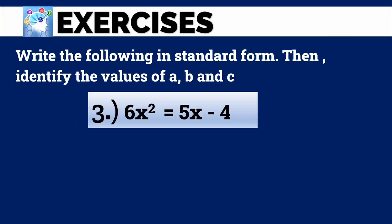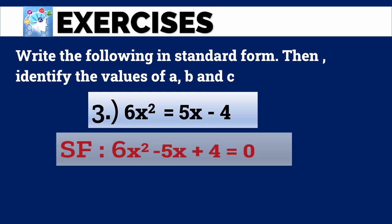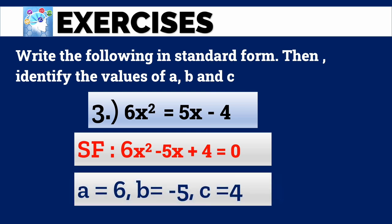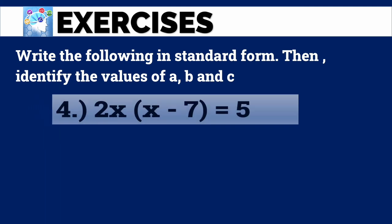Number 3: 6x² = 5x - 4. The correct answer is 6x² - 5x + 4 = 0. A is 6, B is negative 5, and C is positive 4.